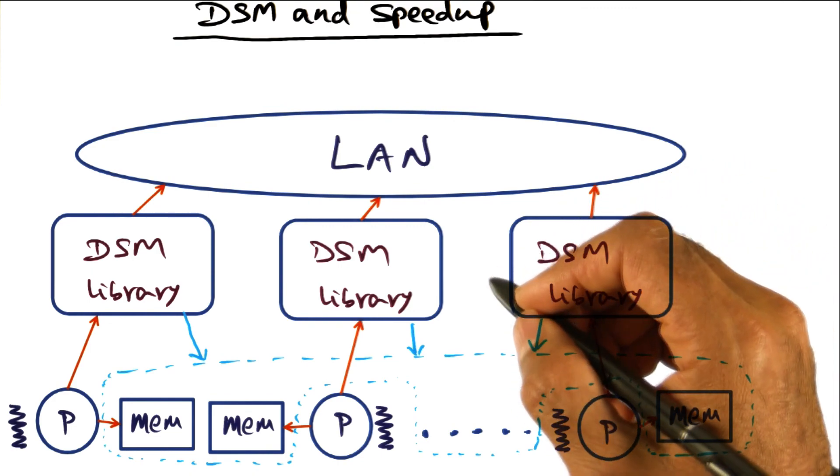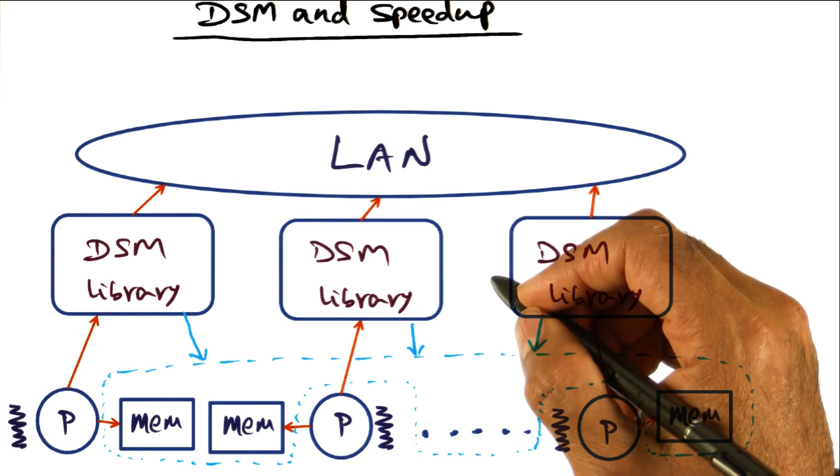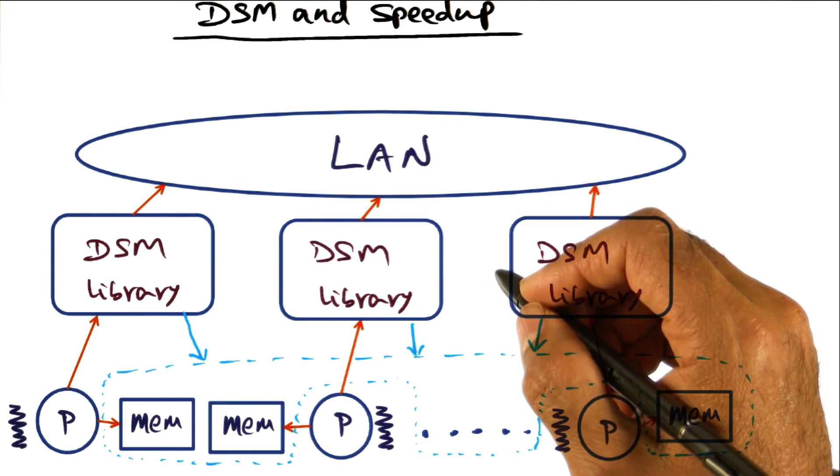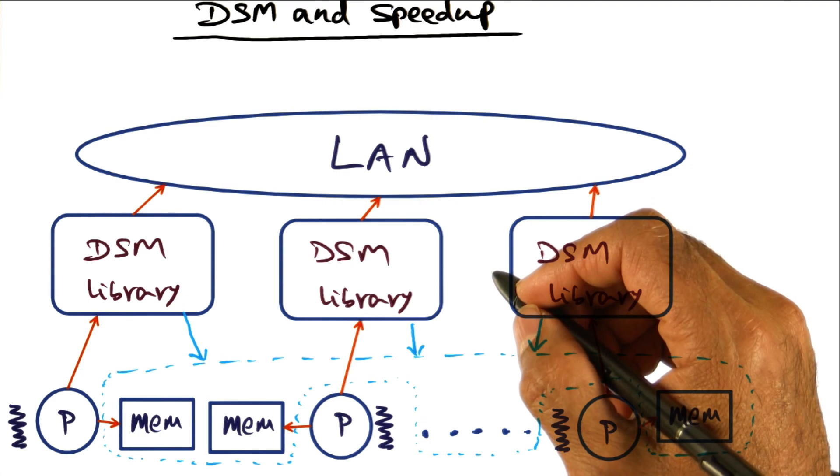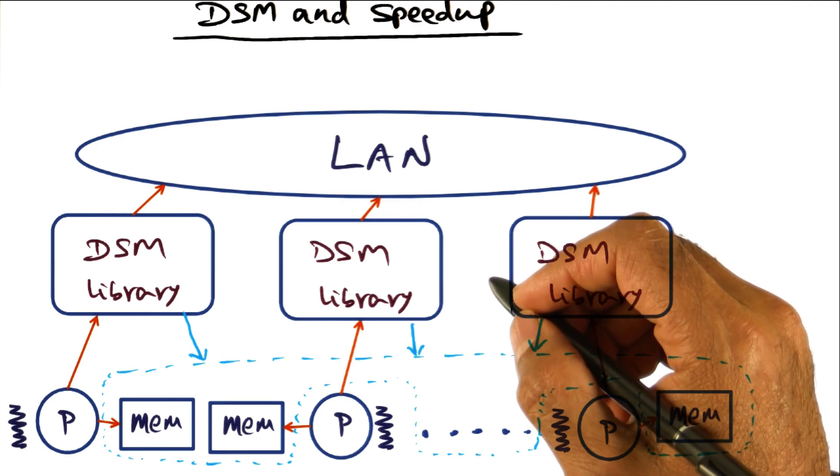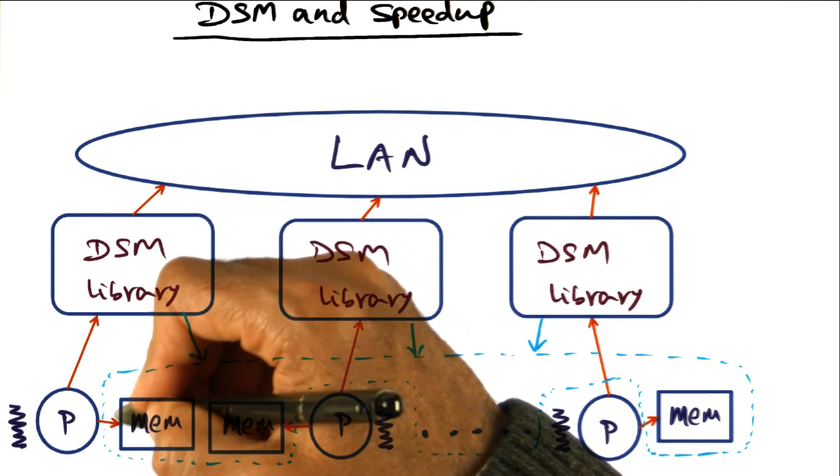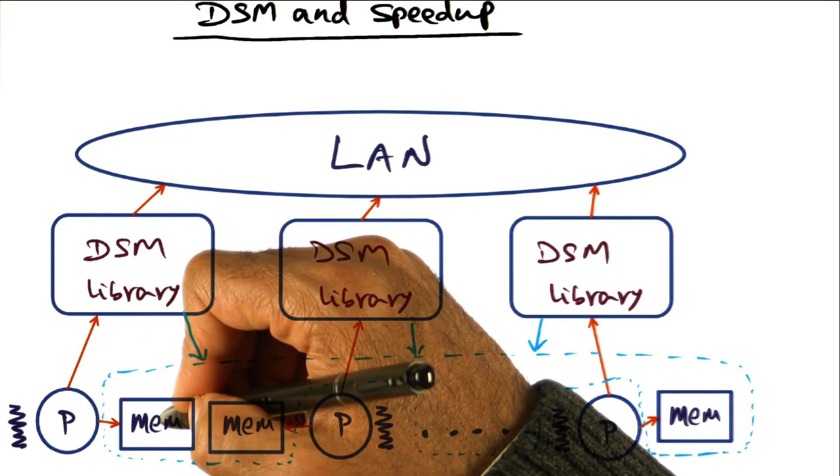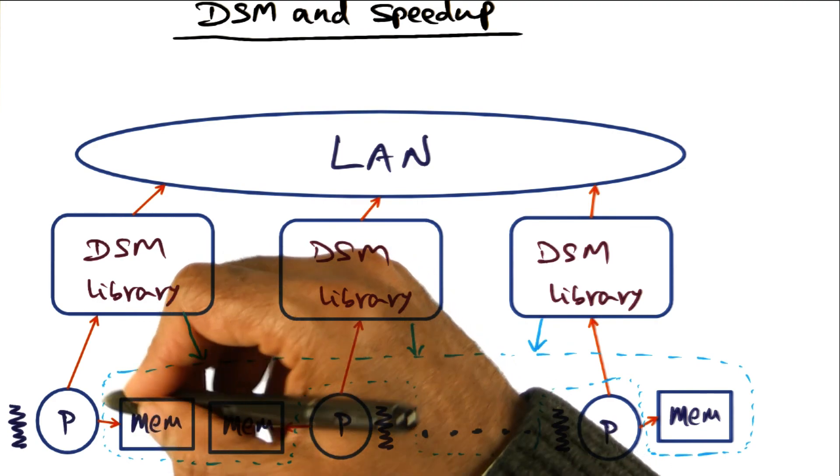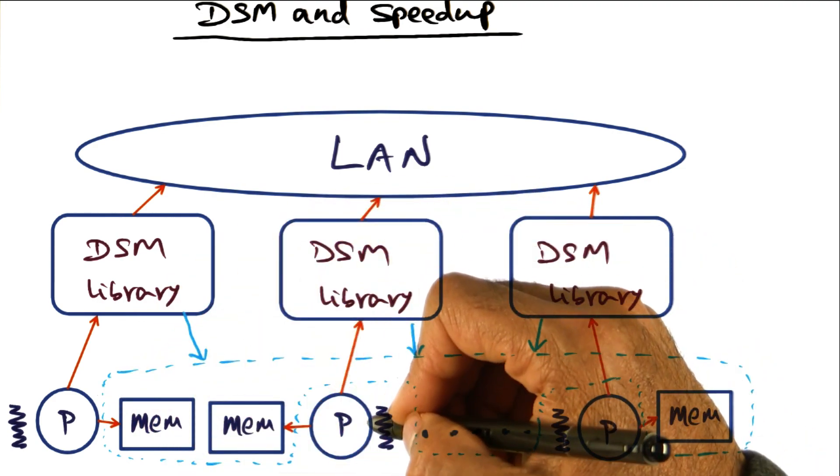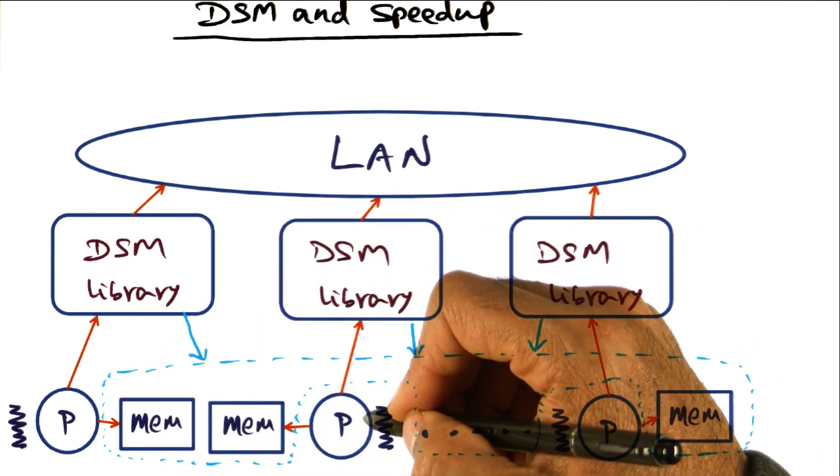So the basic principle is that the computation to communication ratio has to be very high if you want any hope of speed up. In other words, the critical sections that I execute to modify data structures better be really, really hefty critical sections before somebody else needs to access the same portion of the data.